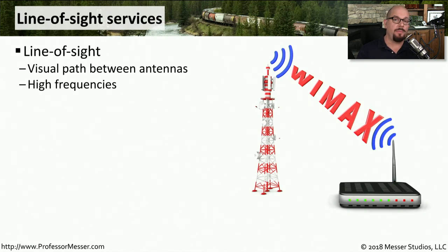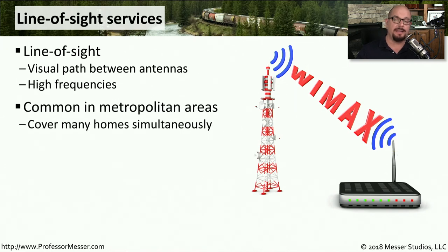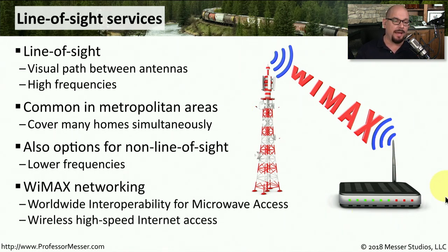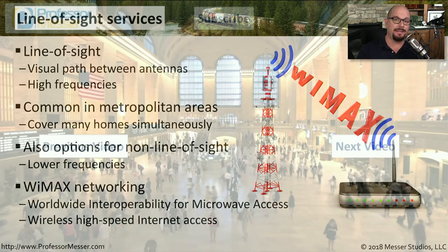In your metropolitan area, you may have the option of a line-of-sight internet service — a wireless internet service able to provide access over a very wide geographical area. Antennas are placed very high to communicate to many different homes simultaneously. There are also non-line-of-sight options, which typically use lower frequencies and offer slower speeds. A very common type of line-of-sight service is WiMAX — Worldwide Interoperability for Microwave Access — which provides wireless high-speed internet connectivity by simply placing an antenna outside your house to access WiMAX antennas in your area.